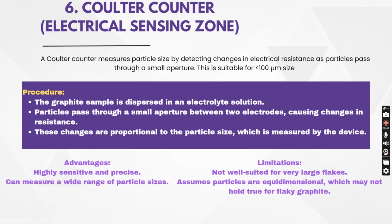The Coulter counter, or electrical sensing zone technique, measures particle size by detecting changes in electrical resistance as a particle passes through a small aperture. It is suitable for fine particles less than 100 microns. The graphite sample is dispersed in an electrolyte solution, particles pass through a small aperture between two electrodes causing changes in resistance, and these changes are proportional to particle size. It is highly sensitive and precise and can measure a wide range of particle sizes, but it is not well suited for very large flakes and assumes particles are equidimensional, which may not hold true for flaky graphite.